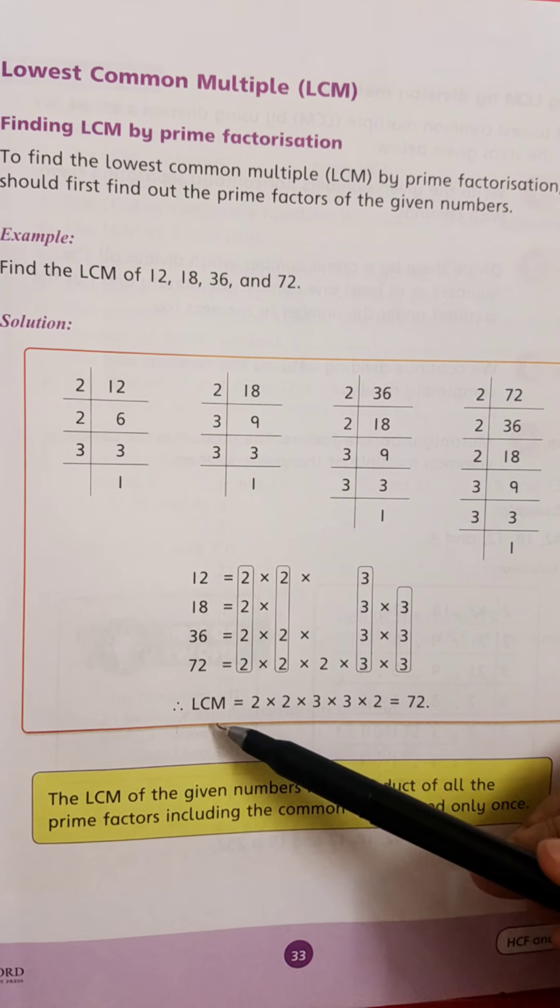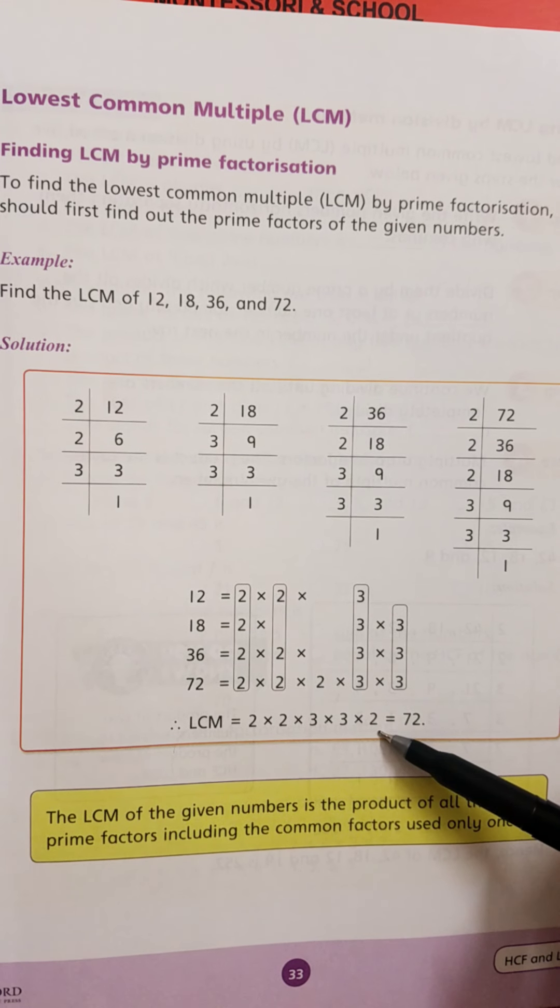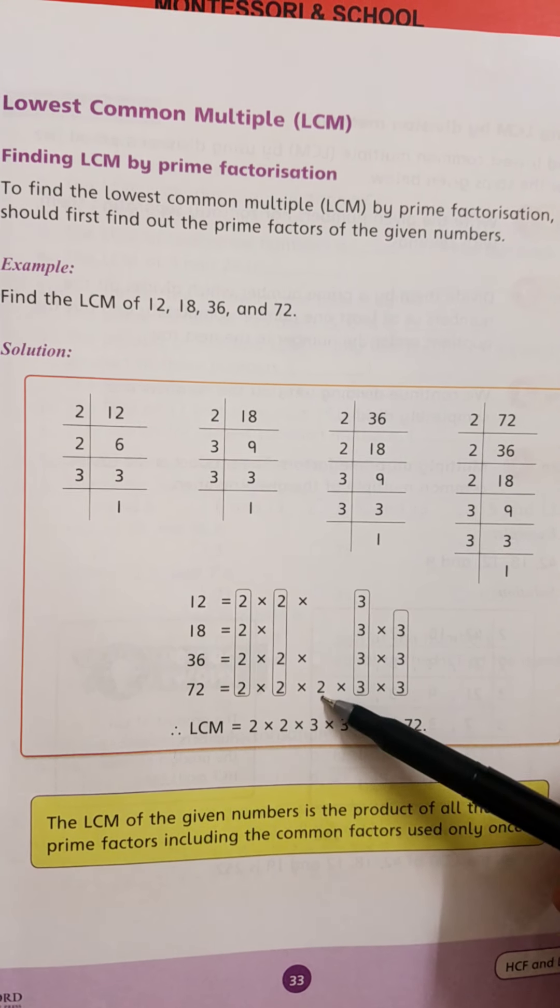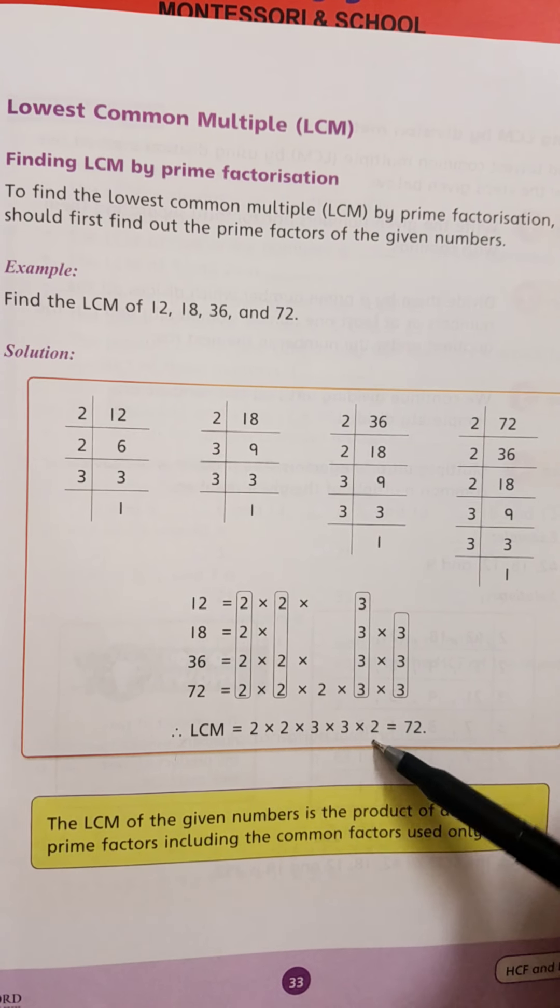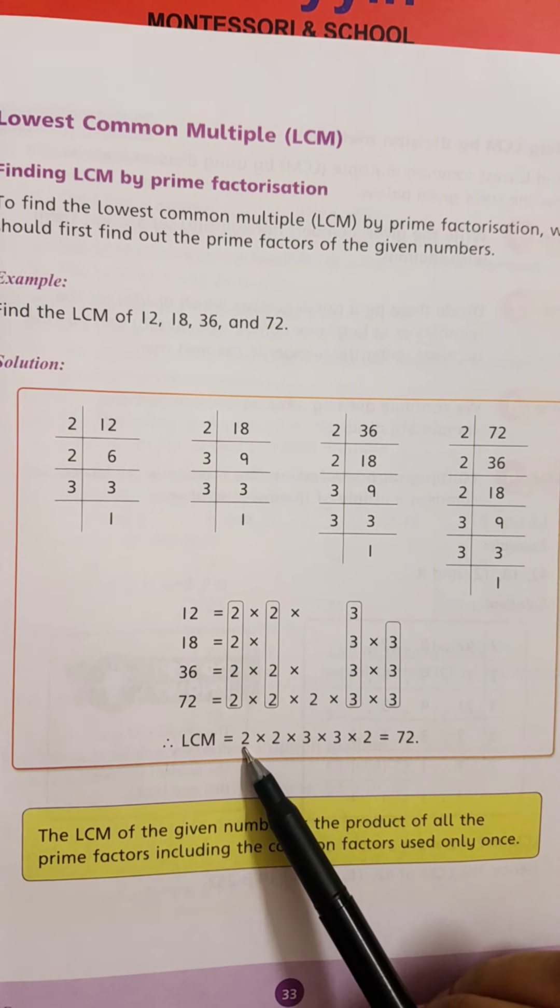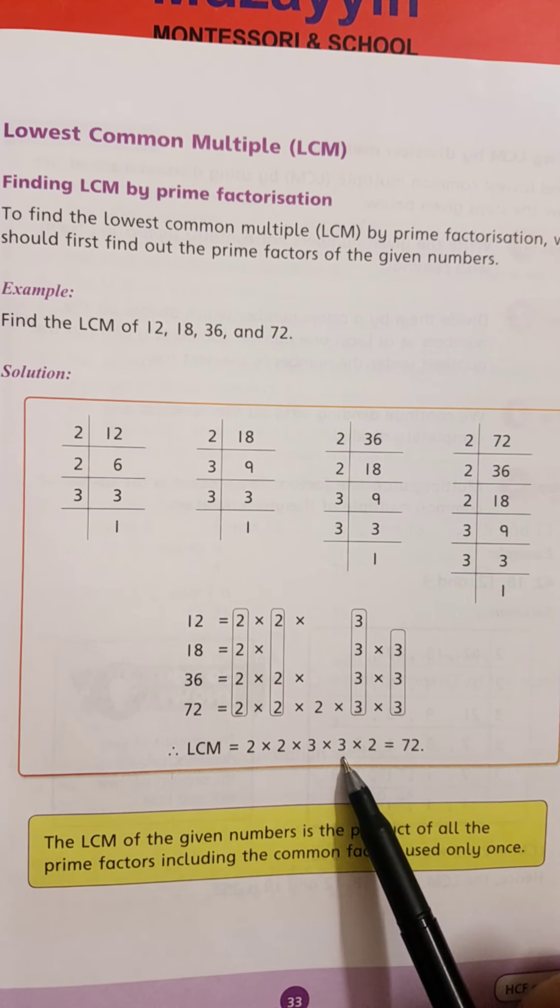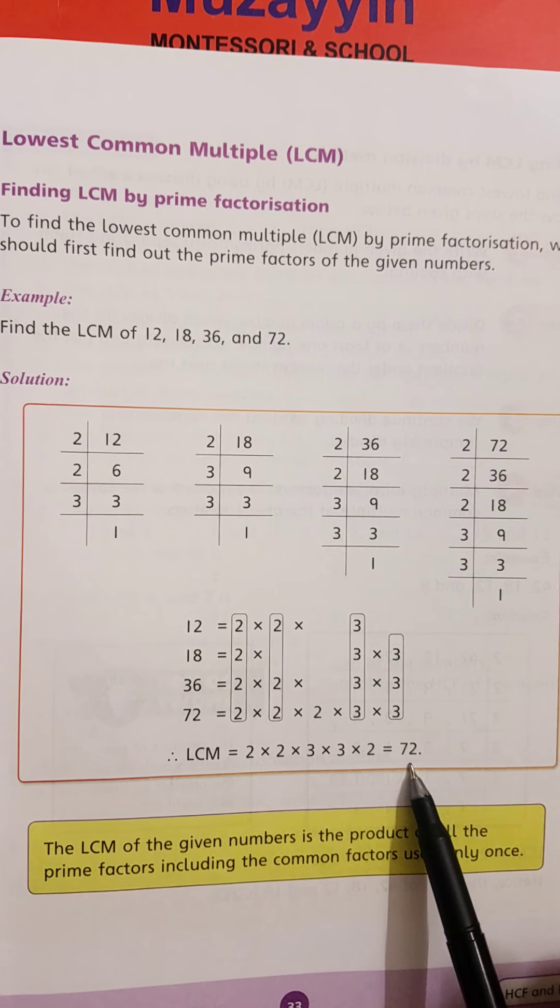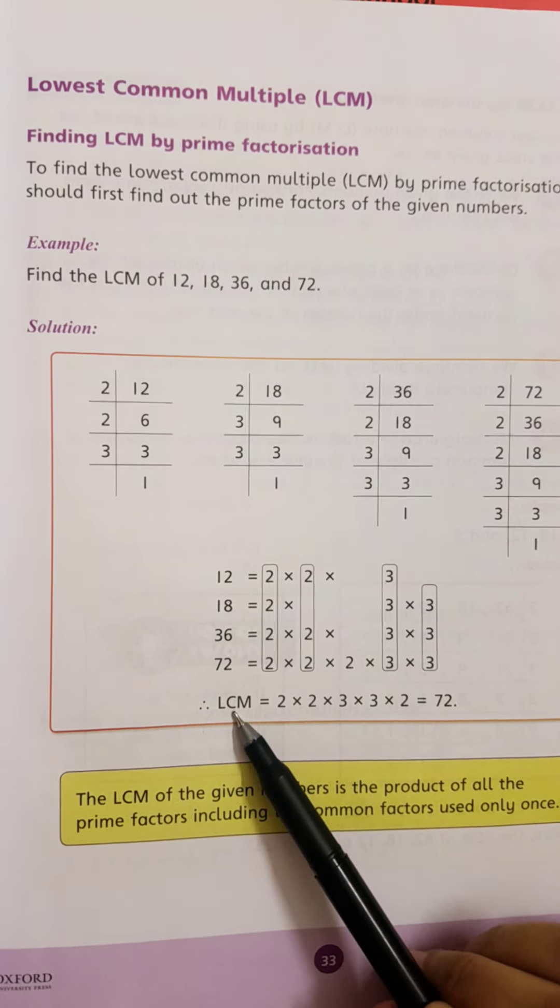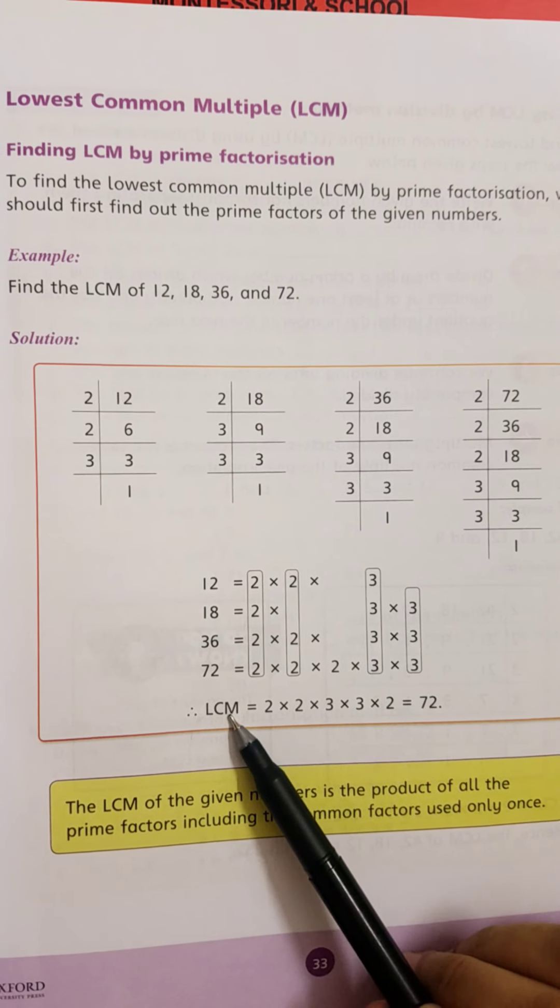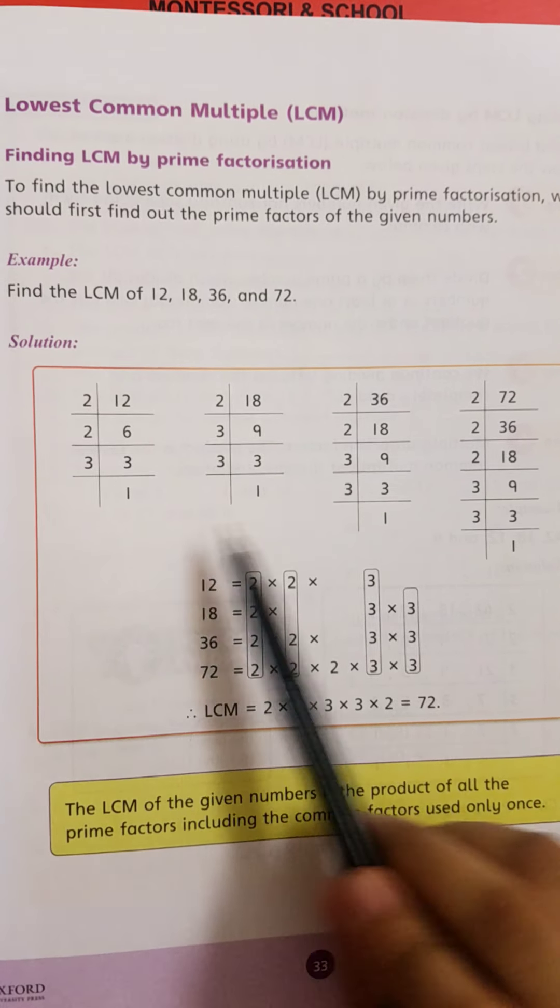The LCM equals all the common factors. Write 2, then 2 again, then 3, then 3. When we multiply: 2 times 2 is 4, 4 times 3 is 12, 12 times 3 is 72. The LCM of these four numbers is 72.